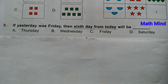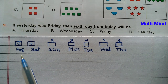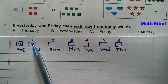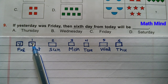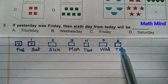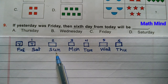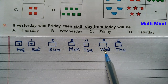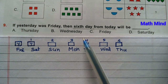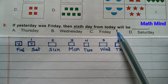Question number 9: If yesterday was Friday, then the 6th day from today will be what? Since yesterday was Friday, today is Saturday — today is day 1. Counting forward: 1 Saturday, 2 Sunday, 3 Monday, 4 Tuesday, 5 Wednesday, 6 Thursday. Thursday will come on the 6th day from today. Option A is correct.